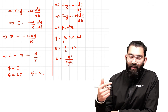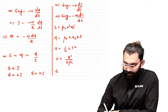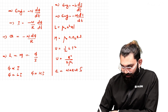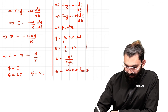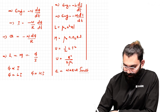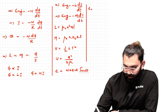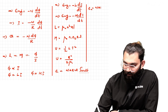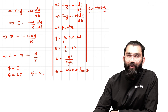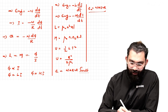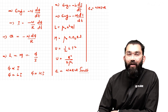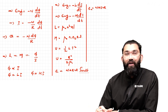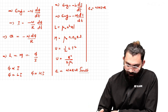AC generator — the induced EMF is equal to NABω sin(ωt). That is the maximum EMF: NABω. Here N is the number of turns of the coil, A is the area of the coil, B is the magnetic field, and ω is the angular frequency or angular velocity of the rotating coil.